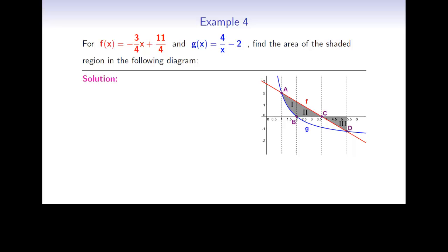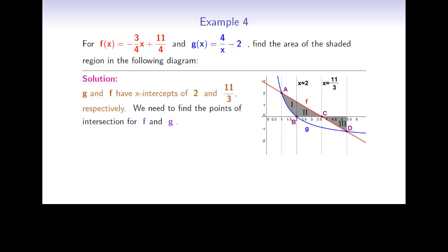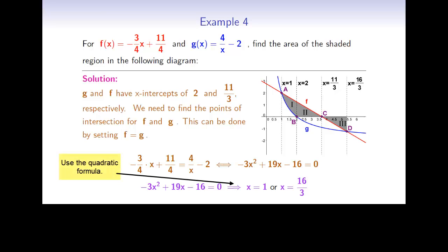To do that, we need to find the x-coordinates of the points a, b, c, and d. g and f have x-intercepts of 2 and 11/3, respectively, found by setting f and g to 0 and solving for x. For the points of intersection of f and g (points a and d), we set f equals g and solve: negative 3/4 x plus 11/4 equals 4 over x minus 2. Rearranging gives the quadratic equation negative 3x squared plus 19x minus 16 equals 0. Using the quadratic formula, we get x equals 1 and x equals 16/3 as the x-coordinates of points a and d.